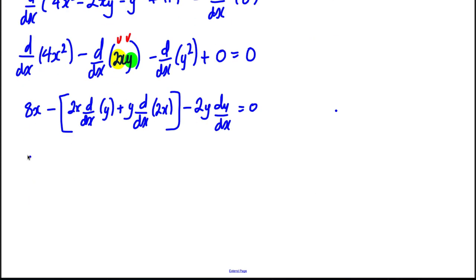So we're nearly there after I've tidied up inside the bracket. It's going to be 8x subtract 2x dy/dx, and here this is going to be y multiplied by 2, so it's 2y. So I'm subtracting 2y and then subtracting 2y dy/dx, and it equals 0.